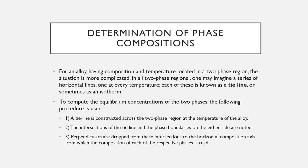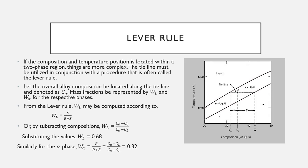Tie lines extend across the two-phase region and terminate at the phase boundary lines on either side. To compute equilibrium concentrations of the two phases: first, a tie line is constructed across the two-phase region at the alloy temperature; second, the intersections of the tie line and phase boundaries are noted; third, perpendiculars are dropped from these intersections to the horizontal composition axis, from which the composition of each phase is read.